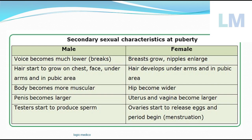In a simpler breakdown: for males at puberty, the voice breaks, hair starts growing on the chest, face, underarm, and pubic area. The body becomes more muscular, and the penis enlarges. The testes start producing testosterone, dihydrotestosterone, and spermatogenesis begins. In females, hair grows under the arm and in the pubic area only, breasts and nipple develop, the body becomes softer with fat deposits and wider hips, the uterus and vagina enlarge, the ovary produces eggs, and the menstrual cycle begins.